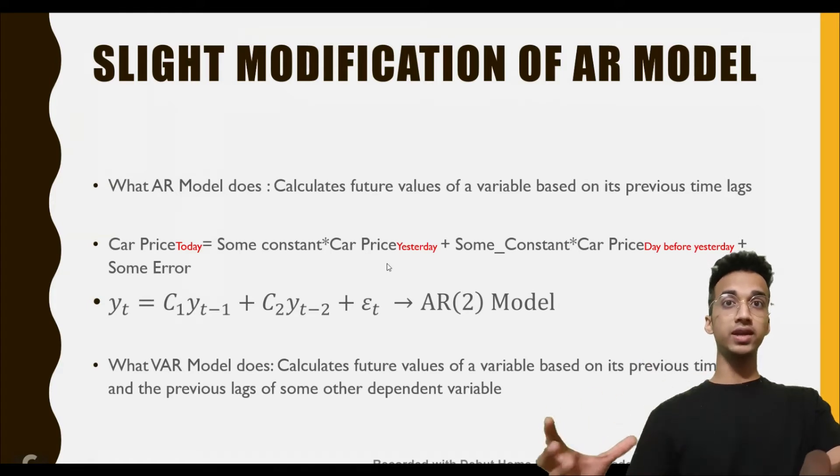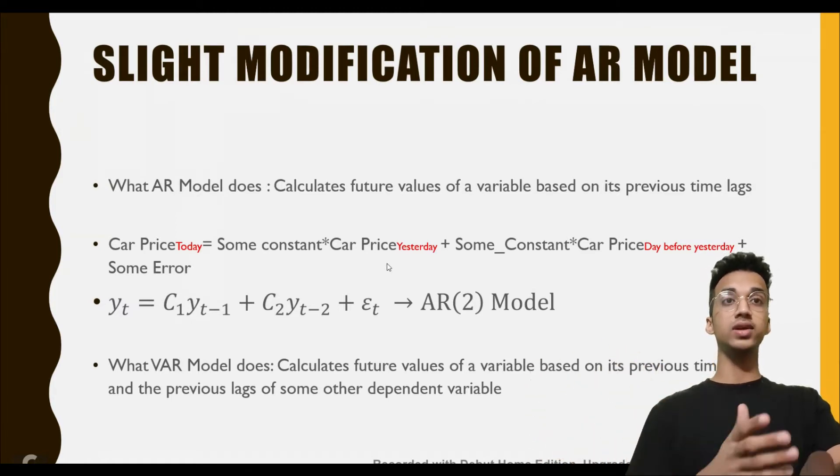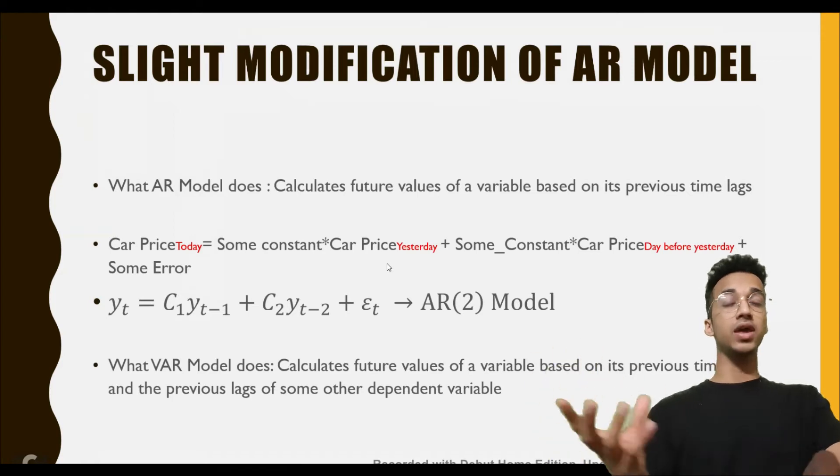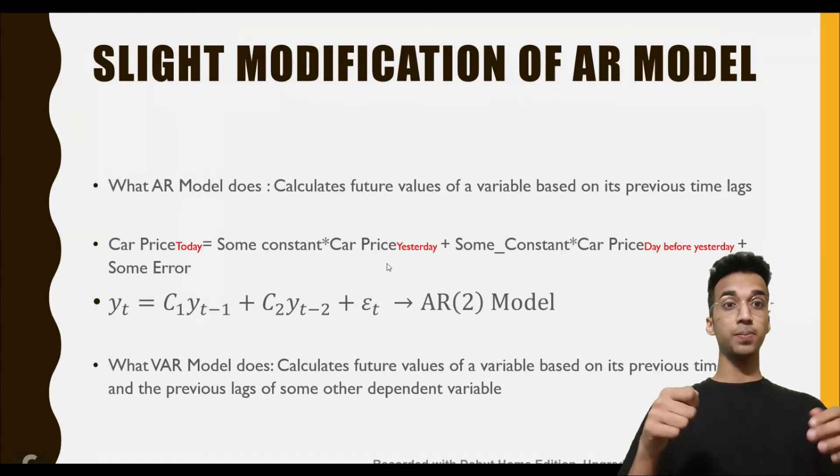Say you want to predict the current value of a variable like the car price today. If it is fit by an autoregression model, the equation would look something like this: the car price today equals some constant times the car price yesterday plus some constant times the car price the day before yesterday plus some error.